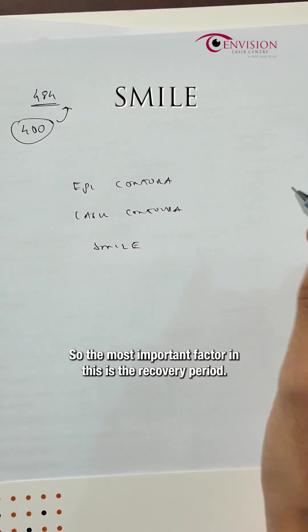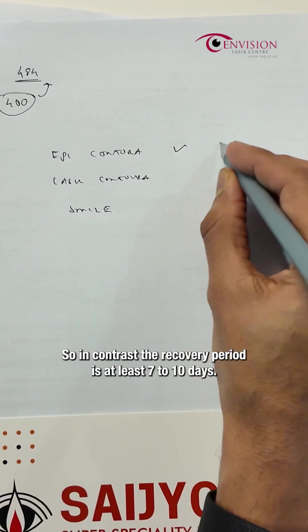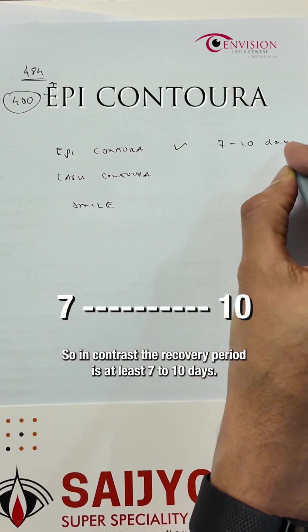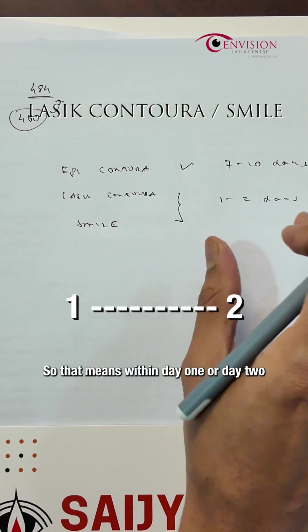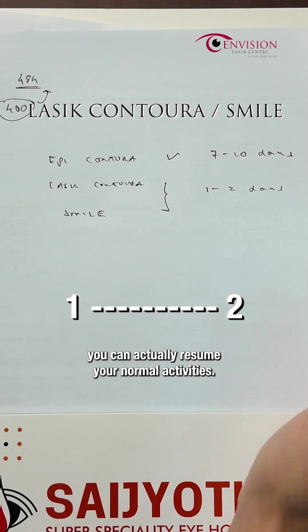So in epicontura, the recovery period is at least 7 to 10 days. But if you're going for LASIK contura or SMILE, the recovery is only 1 to 2 days. That means within day 1 or day 2, you can actually resume your normal activities.